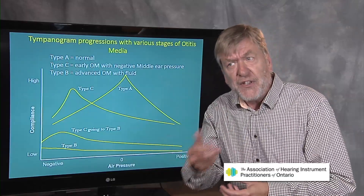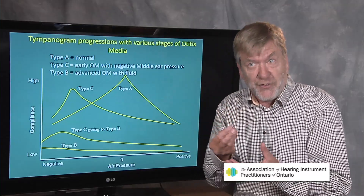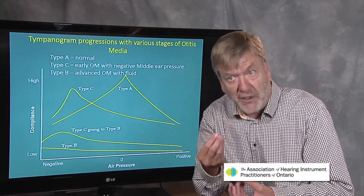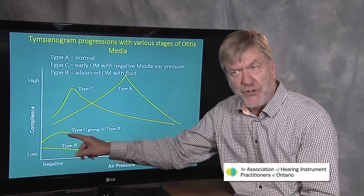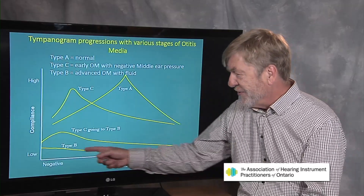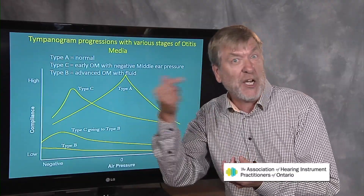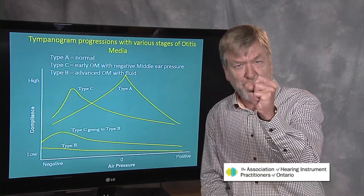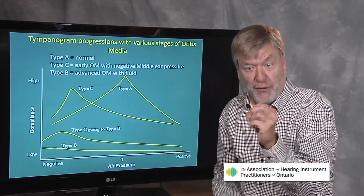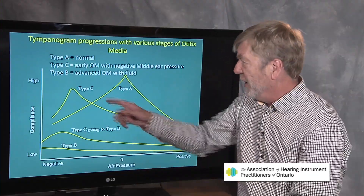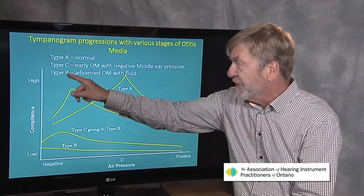As the otitis media advances, the middle ear space begins to fill with serous fluid, and then purulent otitis media develops — a fluid-filled and infected middle ear. Now the Type C tympanogram begins to become very rounded, and finally you've got a flat tympanogram, a Type B, showing no peak whatsoever. Changes of air pressure in the outer ear canal are no competition for pus behind the drum — no amount of air pressure change can counteract the fact that the middle ear space is now filled with fluid.